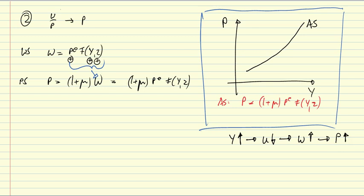So causality runs from Y to P. So we can mark that with the green arrow here. Causality for the AS curve runs from Y to P.